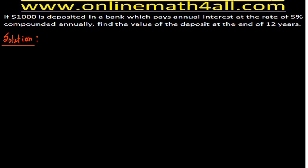Hi, this is Ramachandran from onlinemathforall.com. In this video we are going to see how to solve compound interest problems using geometric sequence. The question is: if $1000 is deposited in a bank which pays annual interest at the rate of 5% compounded annually, find the value of the deposit at the end of 12 years. This is a compound interest problem, but we are not going to use the compound interest formula.